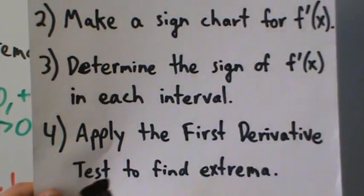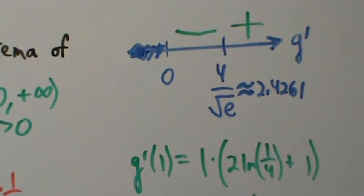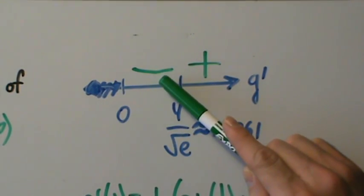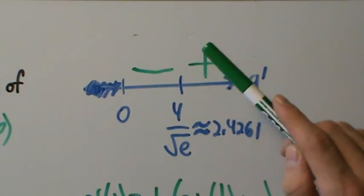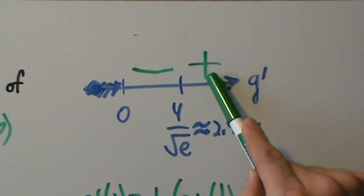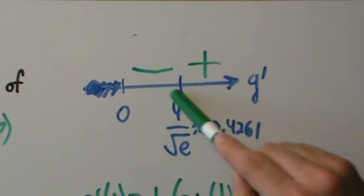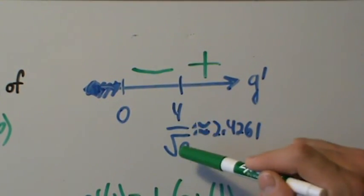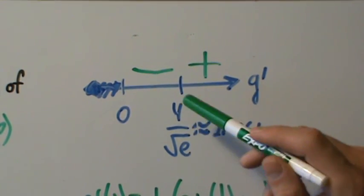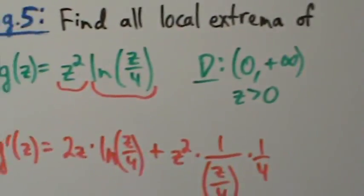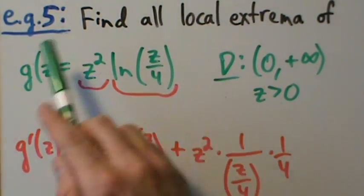Step 4: apply the first derivative test to find extrema. Looking at the sign chart: negative derivative means decreasing function, positive derivative means increasing function. The function decreases then increases — so we have a local minimum at z equals 4 over root e. Now we want to find the actual value of the function at this point by plugging z equals 4 over root e into the original function g.